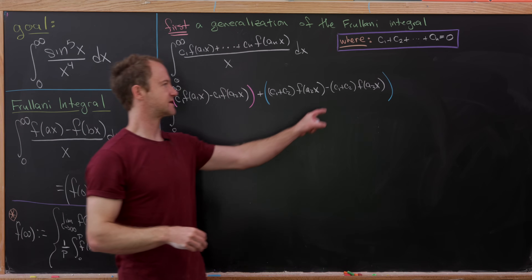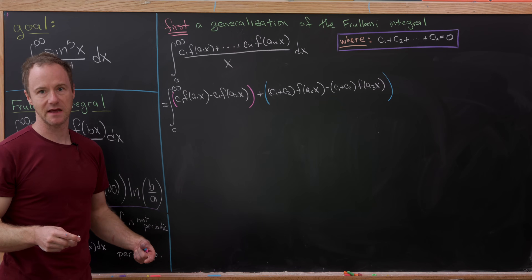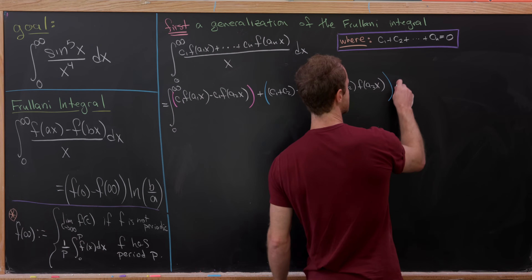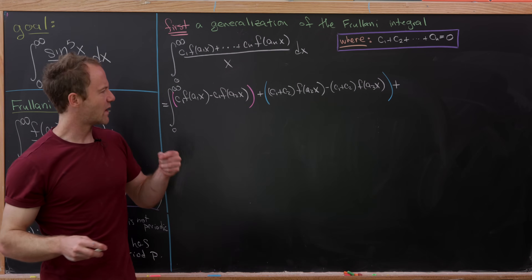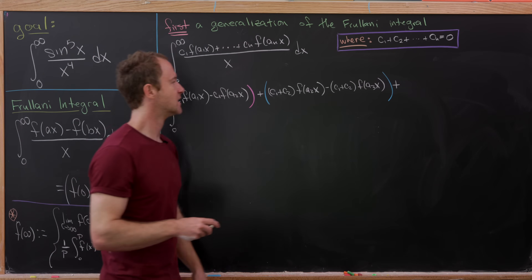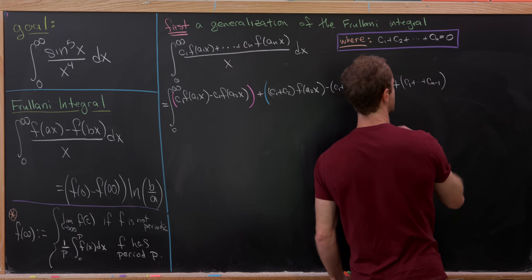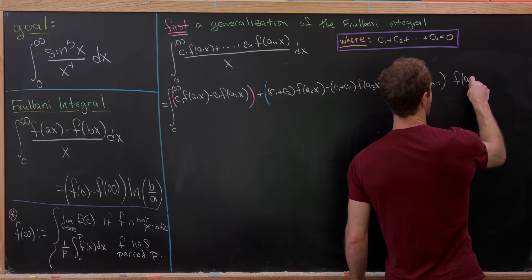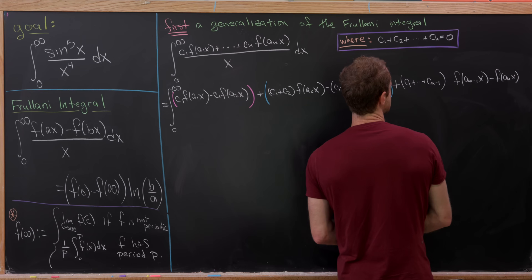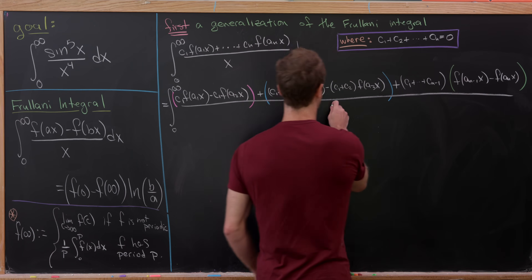That minus (c₁ + c₂)f(a₃x) term doesn't appear in the original, so we add it back in. This process continues on and on until we reach the very last term. For the last term we can factor out c₁ + … + c_{n−1}, giving (c₁+…+c_{n−1})[f(a_{n−1}x) − f(aₙx)], all over x dx.